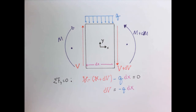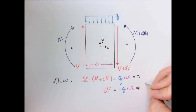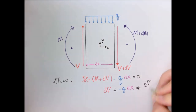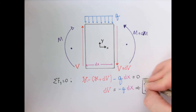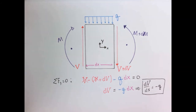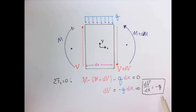Rearranging, we get the simple expression dV/dx = -Q. This tells us that the slope of the shear diagram is equal to the negative of the distributed load.